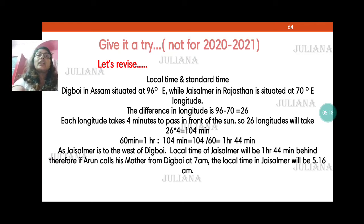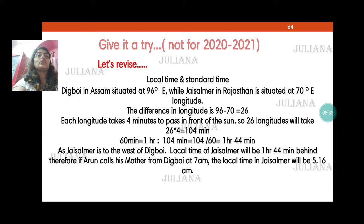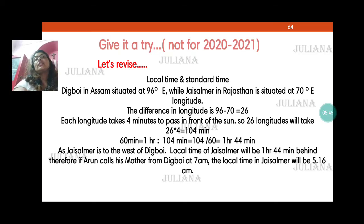There are 360 longitudes total, so there are 360 local times. The time at a particular longitude is considered its local time. As each longitude comes in front of the sun one by one, each will have a different time, and each longitude takes 4 minutes to pass in front of the sun — that is the basics of local time.